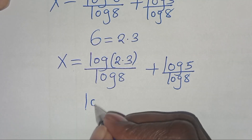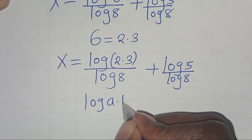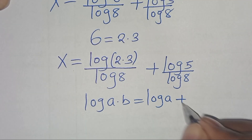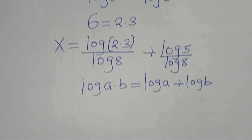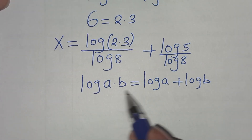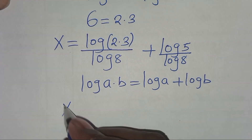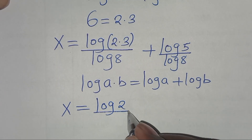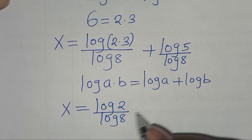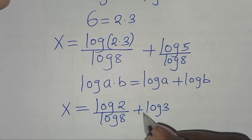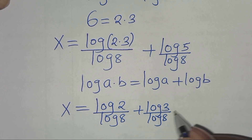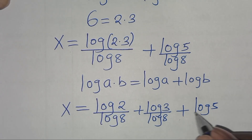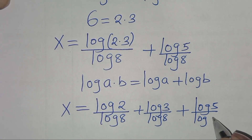Now, log(2 times 3) is in the form of log(a times b), which we can express as log a plus log b. Applying this property, then we have that x is equal to log 2 over log 8, plus log 3 over log 8, plus log 5 divided by log 8.